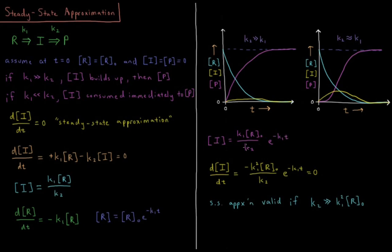According to the steady state approximation, the derivative of [I] with respect to time should be zero. Taking the derivative: d/dt of (K1 R0 / K2) times e to the minus K1T — treating the prefactor as a constant — gives dI/dt equals minus K1 squared R0 over K2 times e to the minus K1T, and this is supposed to equal zero. The exponential e to the minus K1T only equals zero at T equals infinity, which is the trivial case with no reactant left.